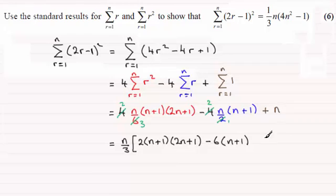And then if we clean this up, you should find that when you group this all up, you end up with 4n² - 1, and there's your proof.